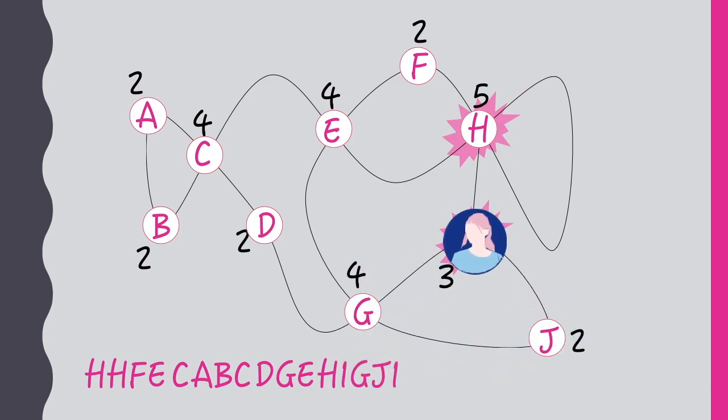Now we can count the string of letters we have — 16 — and note that this corresponds with 15 edges. So our path is the right length, and we could also just check that each edge is represented by a pair of letters to make sure we hadn't missed any out. This isn't the only Euler path here. We could have started at I and gone in the other direction, and there are a number of other possible combinations, but all of them need to run between H and I.